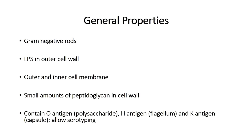We already know that they are gram-negative rods and therefore have certain characteristics, as covered in our introductory videos on gram-positive and gram-negative bacteria. Gram-negative bacteria have lipopolysaccharide in their cell envelope, and they also have an outer and inner membrane and very little peptidoglycan in their cell walls. We also know that they can have antigens in their cell envelope.